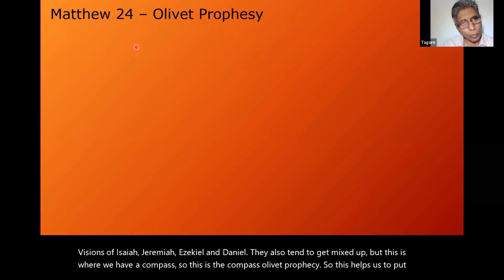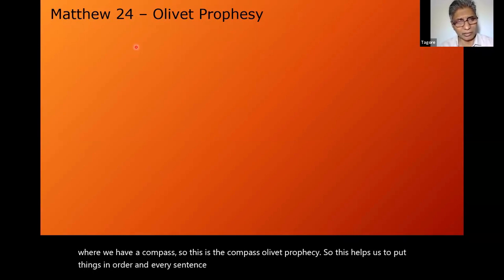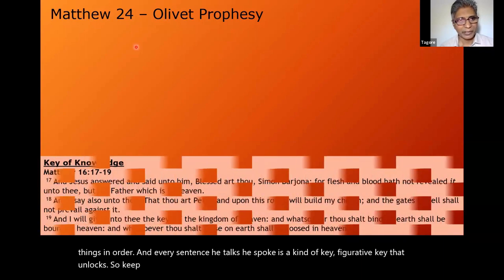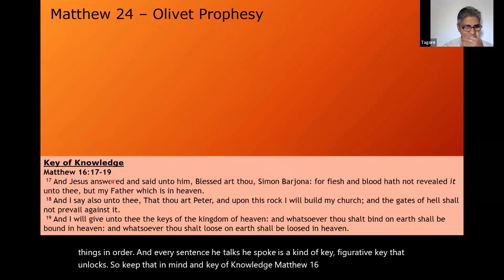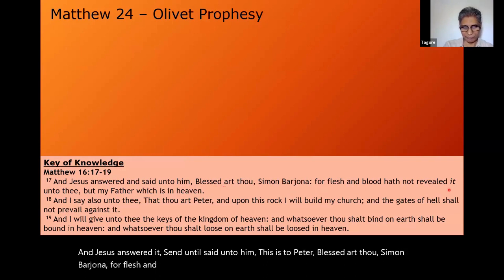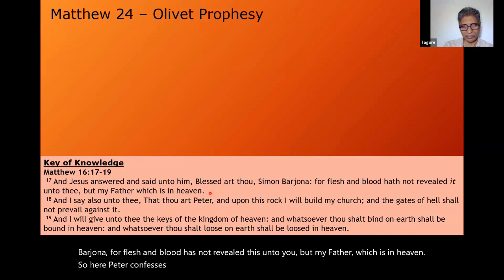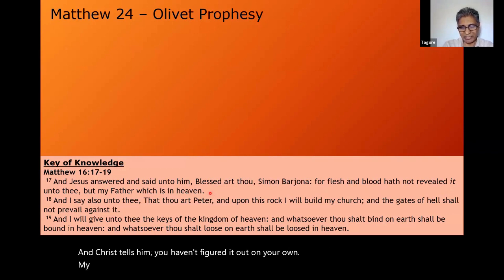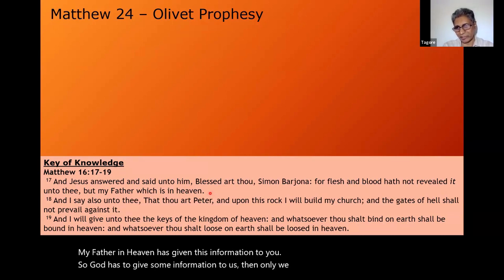Every sentence Christ spoke is a kind of figurative key that unlocks. The key of knowledge is referenced in Matthew 16 verses 17 to 19, where Jesus answered and said to Peter, 'Blessed art thou Simon Barjona, for flesh and blood has not revealed this unto you, but my Father which is in heaven.' So God has to give some information to us — then only we begin to understand. This is the underlying teaching. And then: 'Upon this rock I will build my church, and the gates of hell shall not prevail against it.'